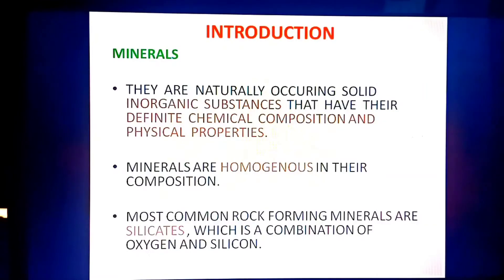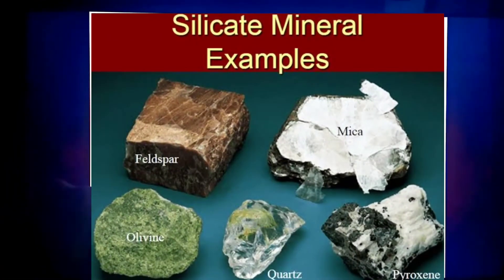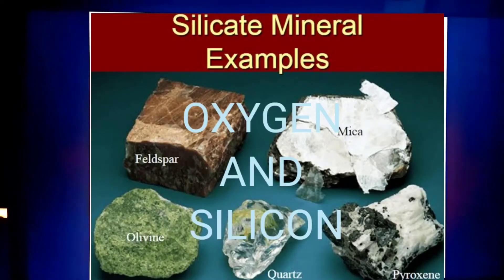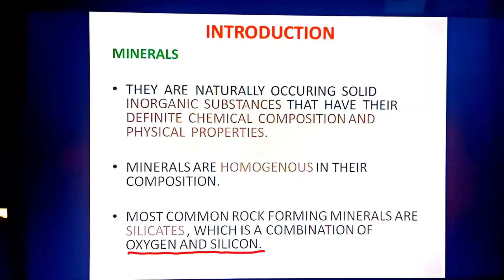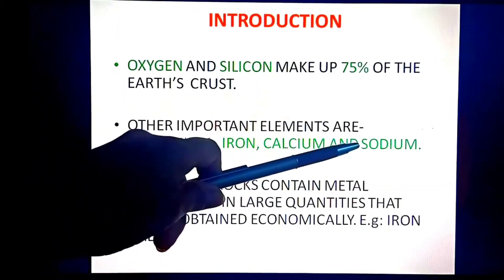The most common rock-forming minerals are silicates, which are a combination of oxygen and silicon. Oxygen and silicon are the two elements found most extensively on Earth — together they make up 75% of the Earth's crust. Apart from oxygen and silicon, other elements found in the crust include aluminum, iron, calcium, and sodium.